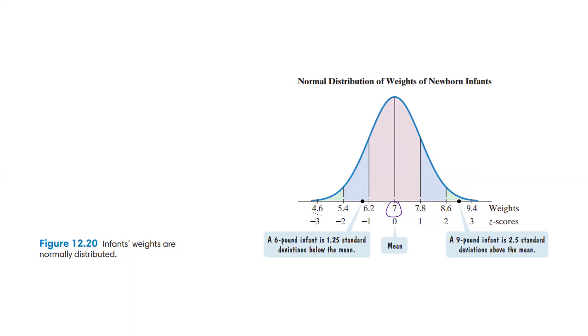You can also get in between here. A 9-pound baby is 2.5 standard deviations above, so that's a z-score of 2.5, whereas a 6-pound baby is 1.25 standard deviations below the mean. We can have numbers above and below and multiple decimal places depending on what they actually ask for.